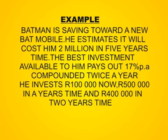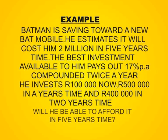Let us look at an example to illustrate. Batman is saving towards a new Batmobile. He estimates that it will cost 2 million Rand in 5 years time. The best investment available to him pays out 17% per annum compounded twice a year. He invests 100,000 Rand now, 500,000 Rand in a year's time and 400,000 Rand in 2 years time. Will he be able to afford the new Batmobile at the end of 5 years?